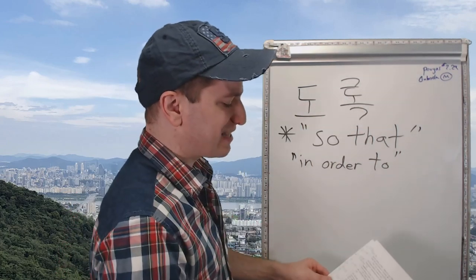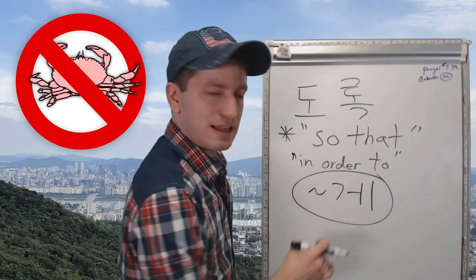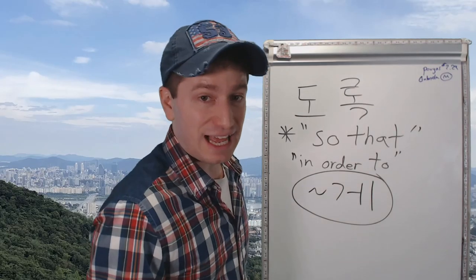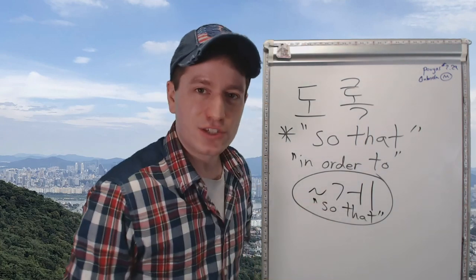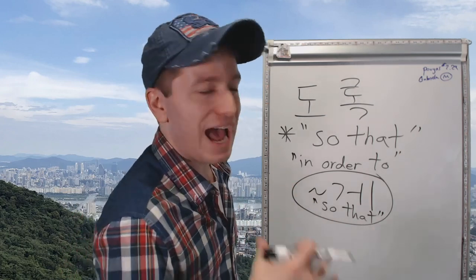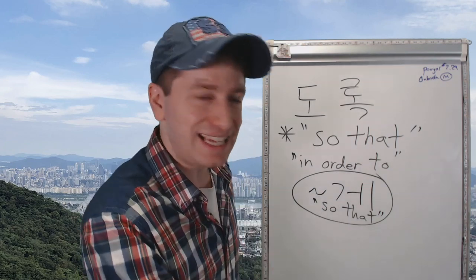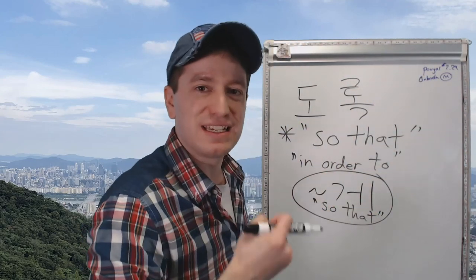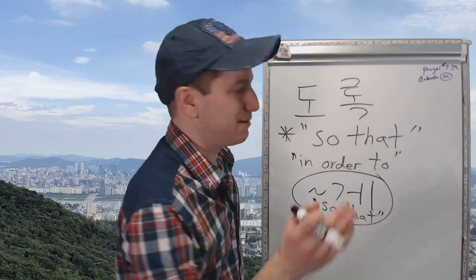This word 도록 actually has the same literal meaning as 게 — and I mean 게 as in 게하다. For example, 하게 하다, 하게 만들다. 게 also means 'so that.' When you say 철수가 청소하게 했어요, 'I made 철수 do the cleaning,' you're saying so that 철수 does cleaning, I made it. Literally: I made it so that 철수 did the cleaning. 도록 has the same literal meaning when used in that manner.